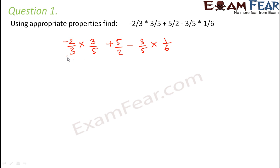When you compare this term with this term, we see 3 by 5 is common. So we will just change the order a bit: minus 2 by 3 into 3 by 5, and this term we will put it as plus, and then we will keep it as 3 by 5 into minus 1 by 6.